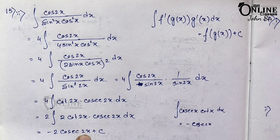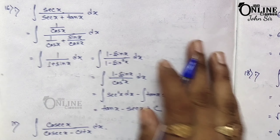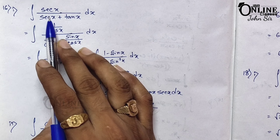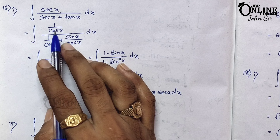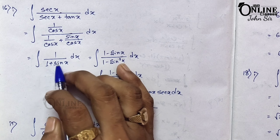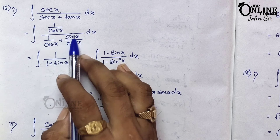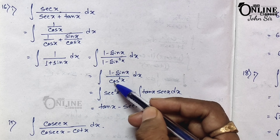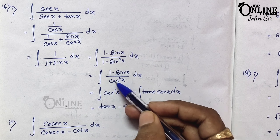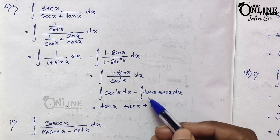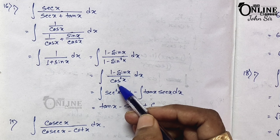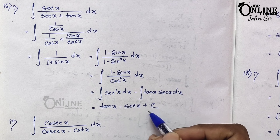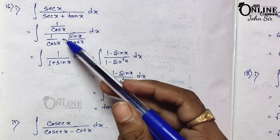Sum 16.1: integration of sec x / (sec x + tan x). Since sec x = 1/cos x and tan x = sin x/cos x, with cos x as LCM, the denominator simplifies to (1 + sin x)/cos x. Then simplifying to 1/(1 + sin x), rationalize by multiplying (1 − sin x): gives (1 − sin x)/cos²x = sec²x − tan x·sec x. Integrating: tan x − sec x + c.